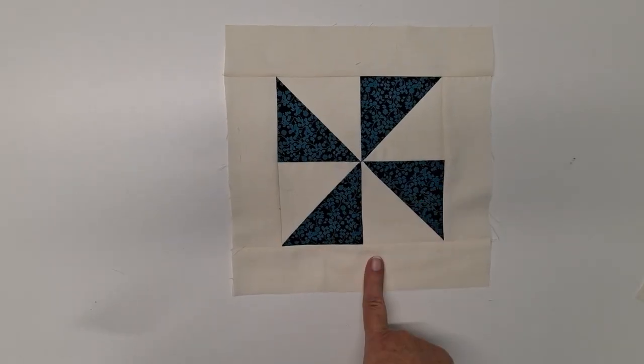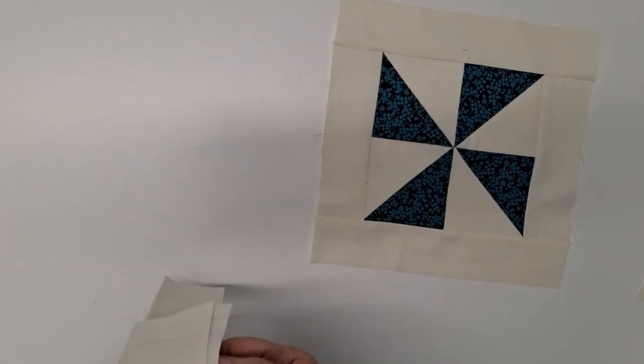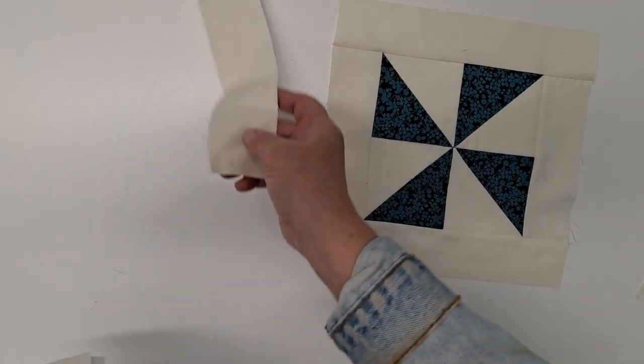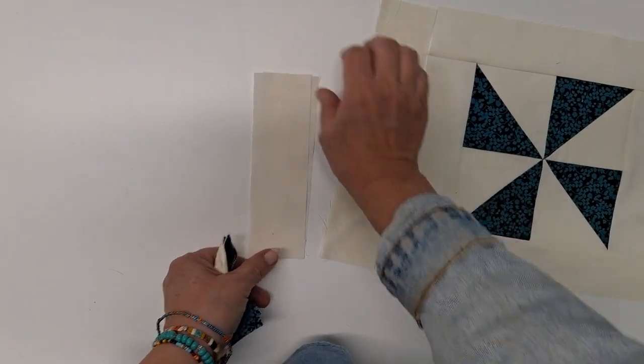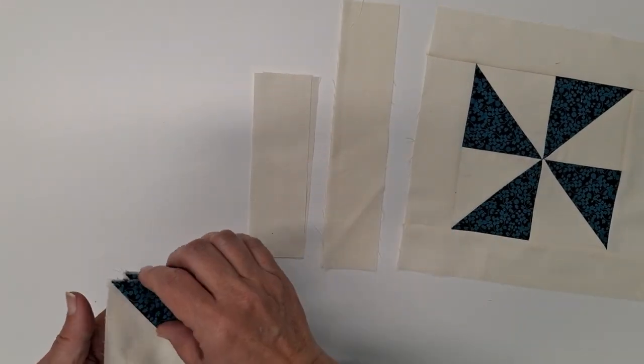Alright, let's get started. To make a floating pinwheel block, you're going to want, for your background, two 2½ by 9½ inch strips and two 2½ by 6½ inch strips.